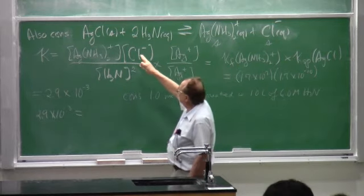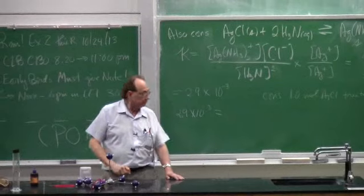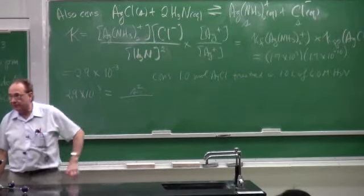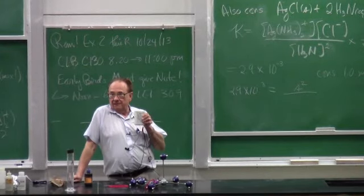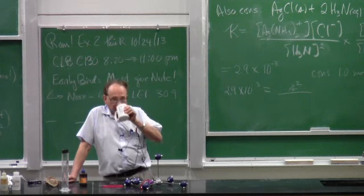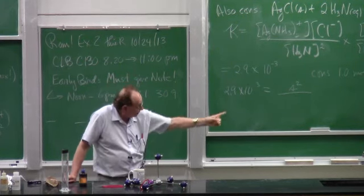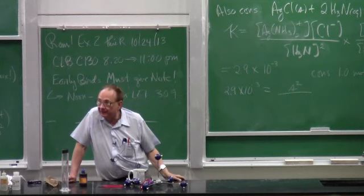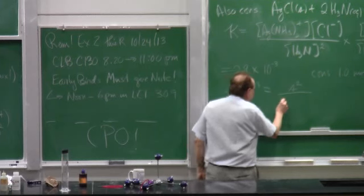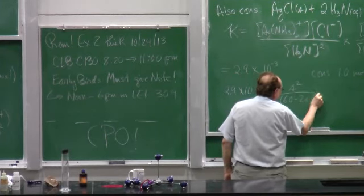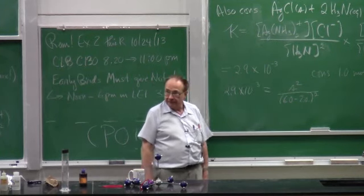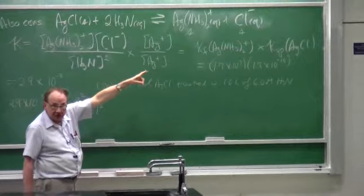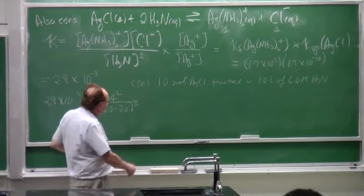What will be the equilibrium molarity of the ammonia? I'm listening. What was the original molarity of the ammonia? 6.0. How much of the ammonia had to get used up to establish this equilibrium? 2S. Right? Don't forget the stoichiometry. This started out as 6.0. The coefficient tells us that to make S moles per liter of silver ammonia complex ion or S moles per liter of chloride ion, you've got to use up 2S moles per liter of ammonia. So there it is.